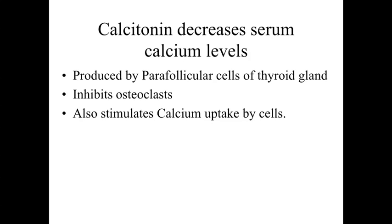Calcitonin essentially does the opposite of that. Calcitonin is going to have an overall effect of decreasing serum calcium levels, and it is produced by parafollicular cells within the thyroid gland. In response to elevated calcium levels within the blood, it releases this hormone. Calcitonin stimulates a whole variety of cells within the body to uptake the calcium — drawing calcium in from the bloodstream and then either storing it within the cells or expelling it from the body. That's a rapid response, and it's also going to have the effect of inhibiting osteoclasts to slow down the bone resorption process.